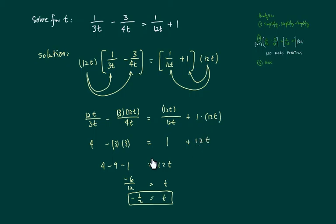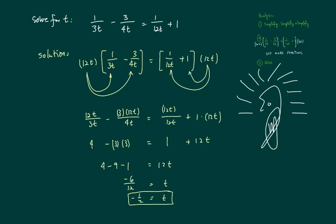12t cancels over here, does not leave it to be 0 but it's 1 because it's 12t divided by 12t, that's 1. 1 times 12t gives 12t over here. Gather alike terms and I'm going to divide by 12 so that t is isolated and the final answer is t equals negative 1 half.